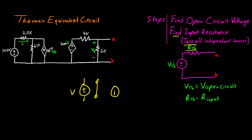For a current source, which says there is a constant current flowing through that element, turning it off means replacing it with an open circuit — simply remove it from your circuit. Now something incredibly important that is often mistaken: this is only true for independent sources, meaning a fixed value of voltage or current that doesn't change. Dependent sources — shown as diamonds — must be kept in the circuit because they contribute to the overall resistance.